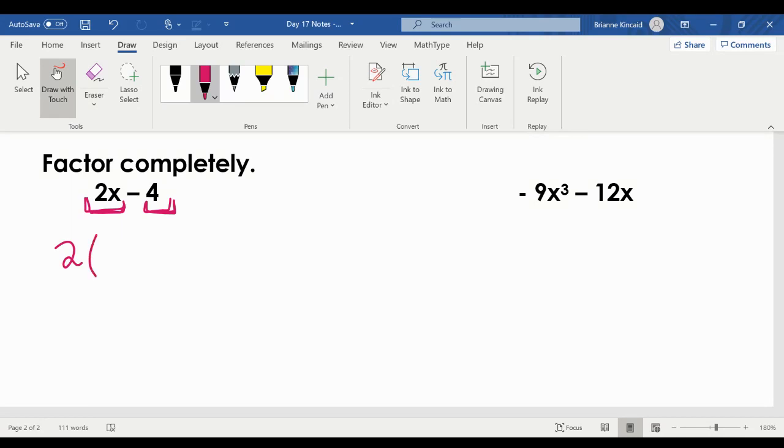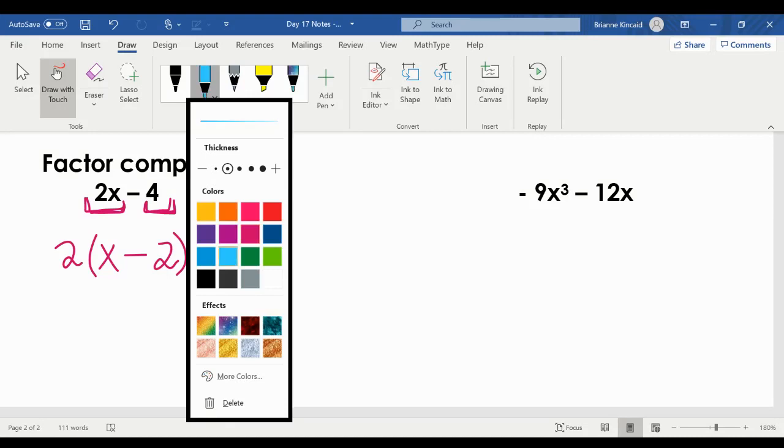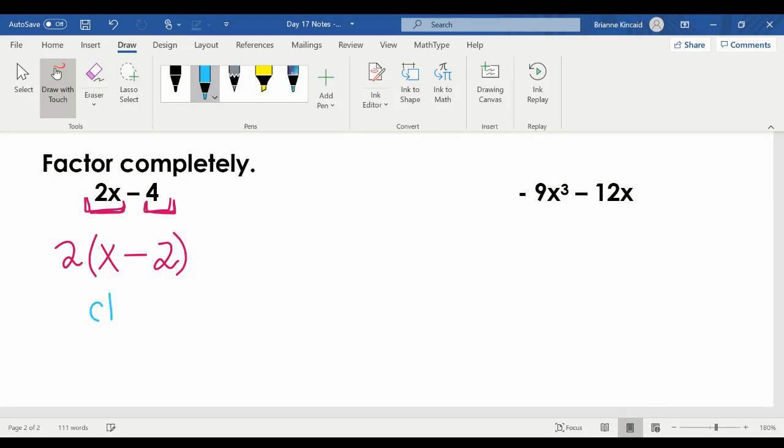So when I factor a two from 2x, I'm left with x. When I factor a two from negative four, I'm going to be left with negative two. Remember, it's undoing the distributive property. So really what we want to be thinking about is when I take a two out, what am I going to need to multiply it by to get back to 2x and then to get back to negative four?